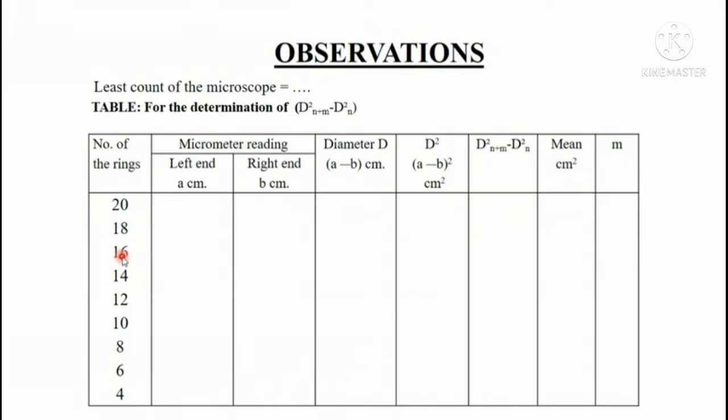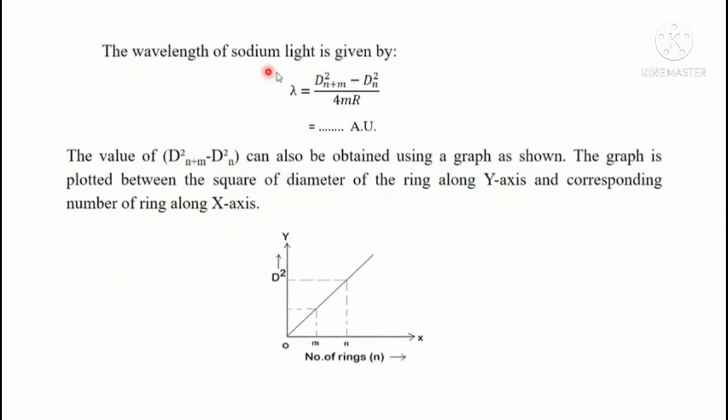Then we choose any number m, say 4. We will subtract the reading of 16th ring from 20th ring and get the d²ₙ₊ₘ - d²ₙ, and so on from 10th to 14th and 8th to 12th. The wavelength of the sodium light is given by λ = (d²ₙ₊ₘ - d²ₙ) / 4mR where R is the radius of curvature of plano convex lens and can be found using spherometer. These values of R and d²ₙ₊ₘ - d²ₙ will be substituted in the formula and the result is reported in angstrom unit.